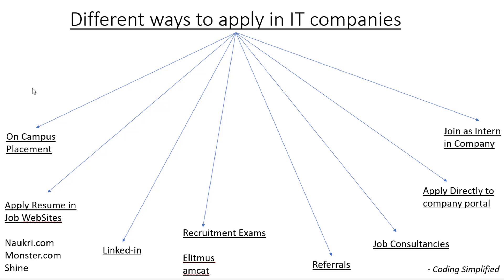The second option is to apply your resume on job websites. Personally, I've observed this is a very fruitful approach. You should apply on different job websites like Naukri.com, Monster.com, Shine.com, and Indeed. When you apply your resume there, job consultancies look at it and if they find your skills relevant — say Java or data structures — they pick your resume and apply it directly to different companies.